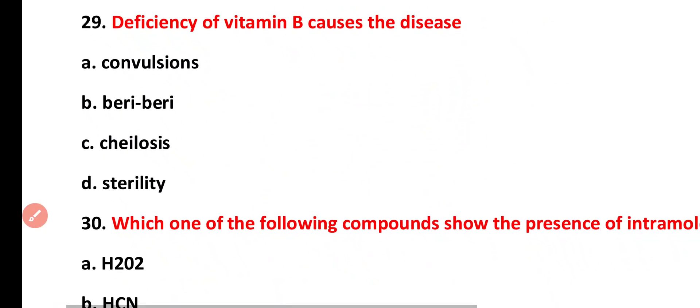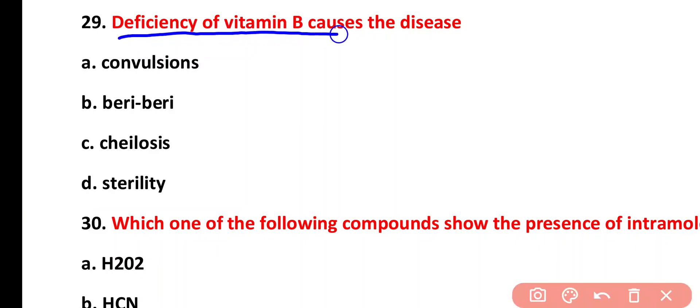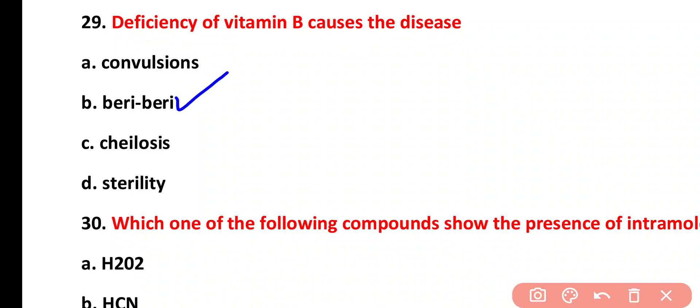Question twenty-nine: deficiency of vitamin B causes which disease? Options: convulsion, beriberi, cheilosis, or sterility. The correct answer is option B. Beriberi and pellagra are diseases caused by the deficiency of vitamin B.